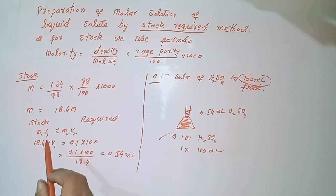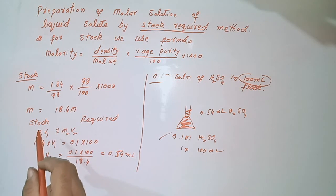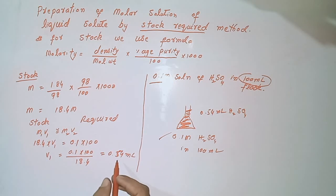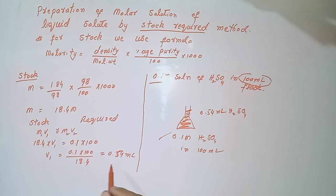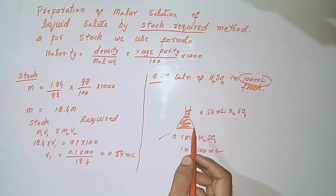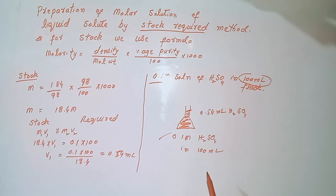The stock bottle is the one that exists in the given laboratory. We will take 0.54 ml of sulfuric acid with the help of a pipette, add it to the flask, and make this solution.